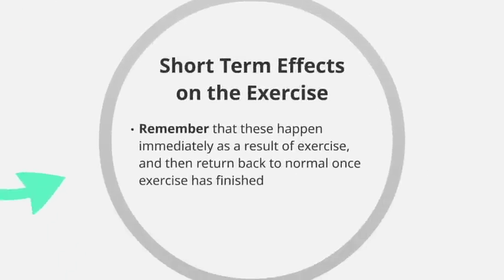This sums up the short-term effects that exercise has on the three body systems. It's important to remember that these happen immediately as a result of exercise, and then return back to normal once exercise is finished. As soon as we start exercising, we see an increased heart rate or increased breathing rate, but these go back to normal when exercise is finished. When our heart rate goes up to 130-140 beats per minute, it doesn't stay like that continuously — as soon as we finish exercising, our heart rate returns back to its normal resting value.